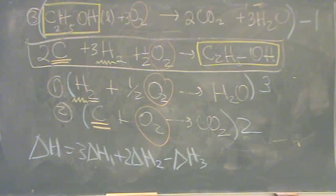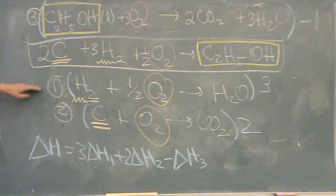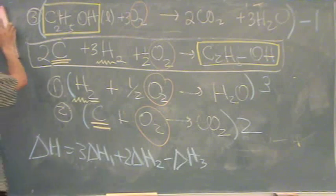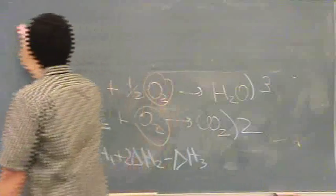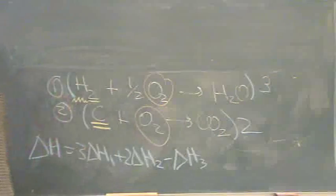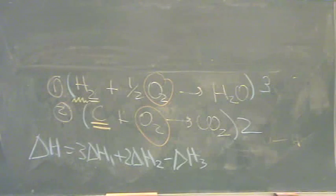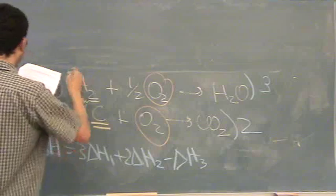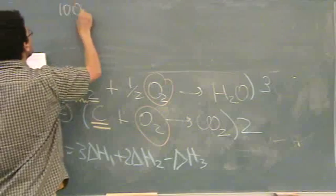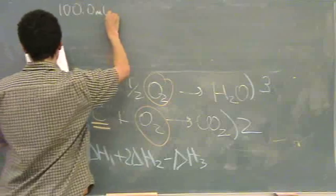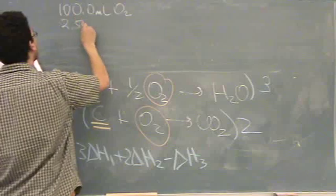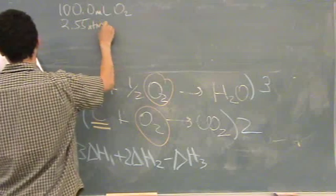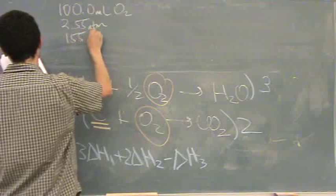Part C. We focus on reaction one. What quantity of heat? Okay, this is similar to one we've done before. So I'm going to erase some stuff here. Okay, we have 100 milliliters of O2. And the pressure is 2.55 atmospheres.